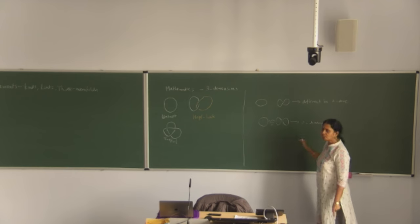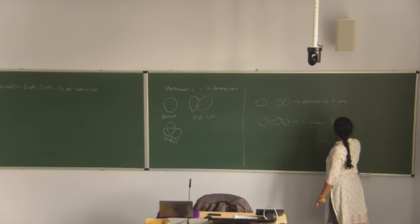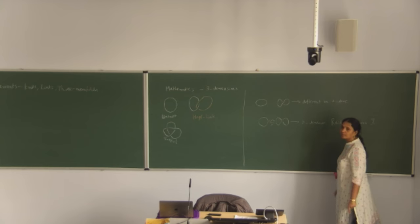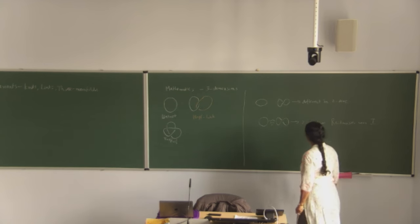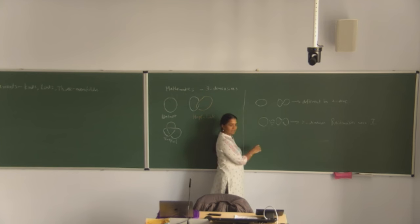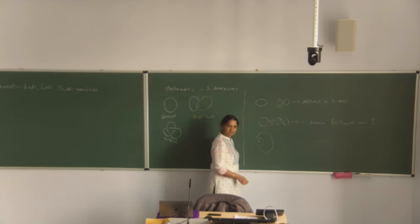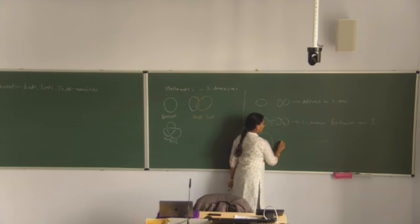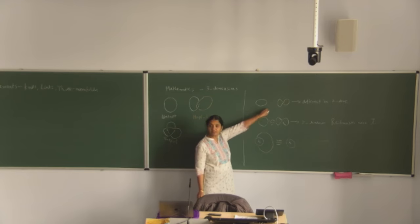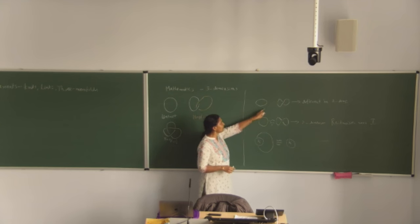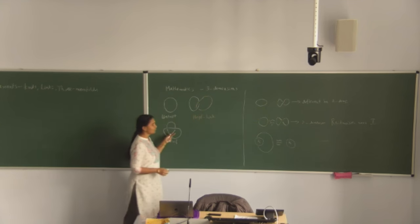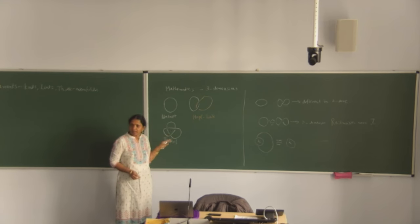These are different in two dimensions, but you can make them equivalent in three dimensions. So these two are equal — this is what you call a Reidemeister move. Reidemeister move one is where, in any region, you can have some non-trivial entanglement and pull out an additional twist. Whatever I draw on two dimensions will be a projection with over-crossings and under-crossings to account for the fact that I am in three dimensions.